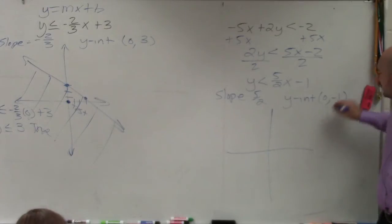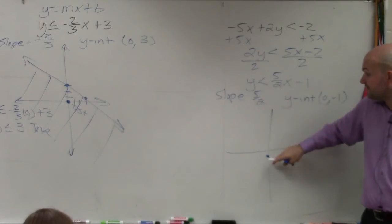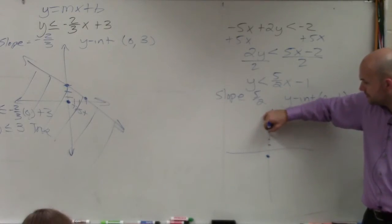So I go to 0, negative 1. Then I follow the slope from my y-intercept to my next point. So I go up 1, 2, 3, 4, 5 to the right 2.